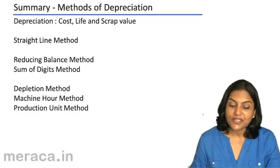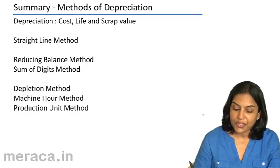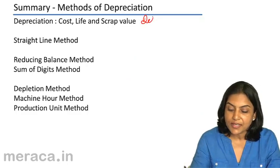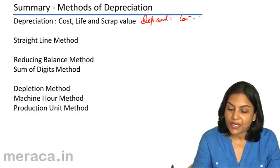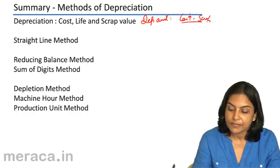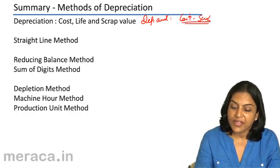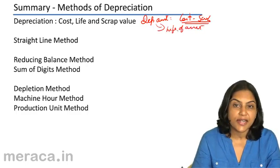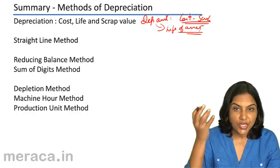What is the depreciable amount? From these factors, we get the depreciable amount, which is nothing but cost minus scrap value. This depreciable amount has to be spread over the life of the asset — that gives us the depreciation amount.